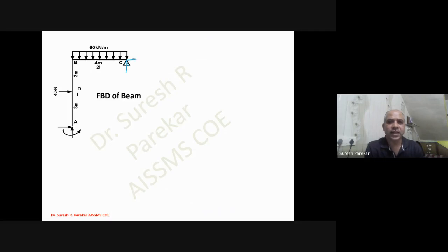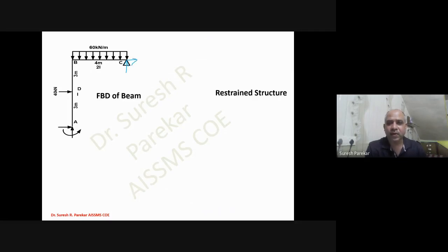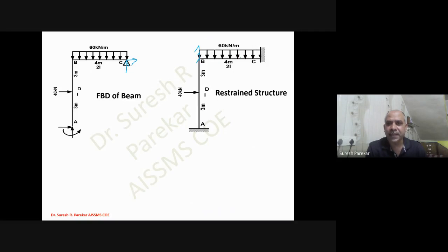For the restraint structure, we make all rigid joints and supports fixed. With two unknowns, we have two FDL values. FDL1 = MF_BA + MF_BC, and FDL2 = MF_CB.